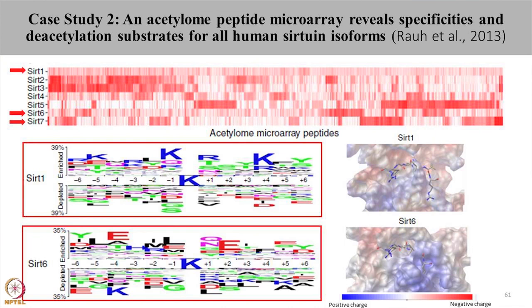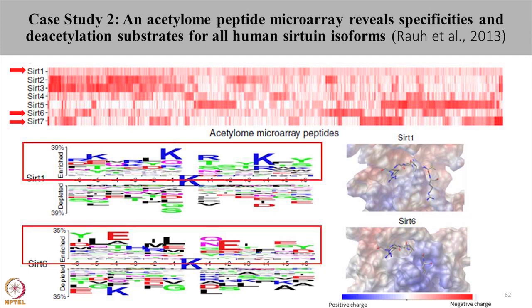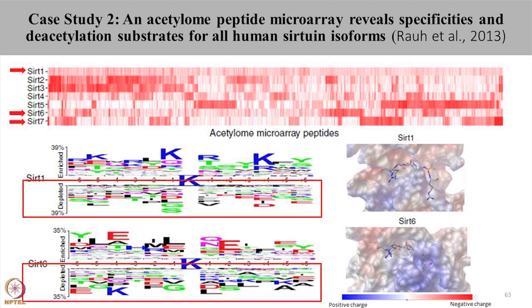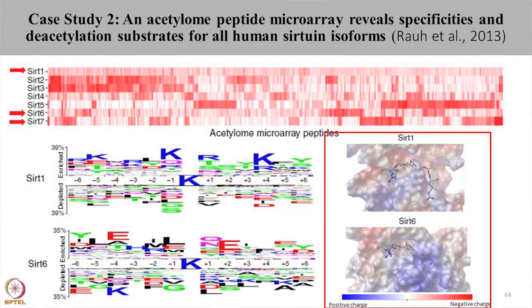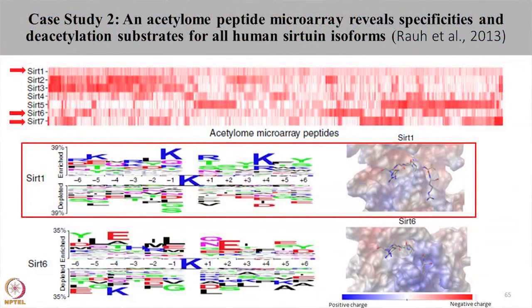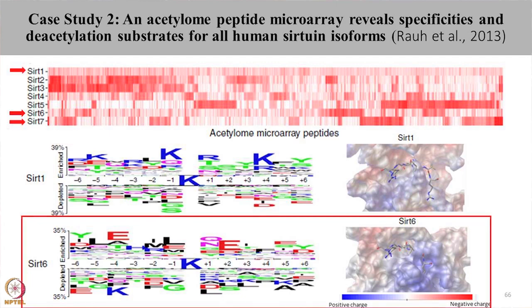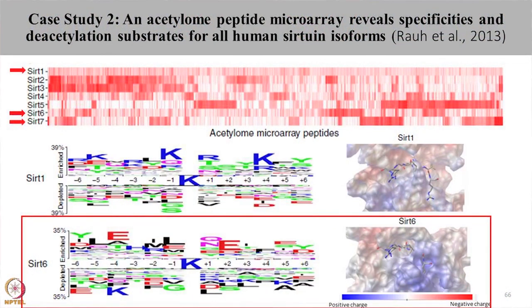The sequence logos show preferred and depleted amino acids for each sirtuin. The upper panel shows enriched — preferred — amino acid sequences, while the lower panel shows depleted sequences that do not favour deacetylation. The right panel shows the peptide binding grooves, with blue regions indicating positively charged and red regions indicating negatively charged amino acids. Sirtuin 1 prefers peptides with positively charged amino acids such as arginine or lysine at positions minus 5, minus 1, plus 1, and plus 4. The peptide binding groove of sirtuin 6 is majorly hydrophobic, and its preferred sequences have hydrophobic residues at positions minus 1, minus 2, plus 3, and plus 4.